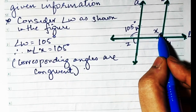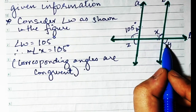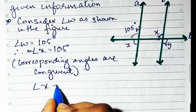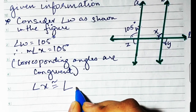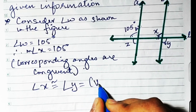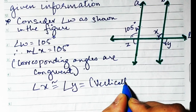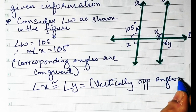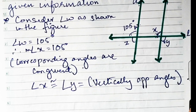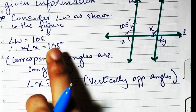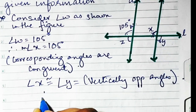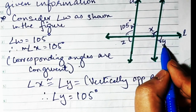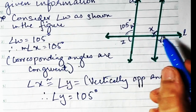So x is 105°. Then y will also be 105° because x and y are vertically opposite angles — angle x is congruent to angle y. Therefore angle y is also 105°.